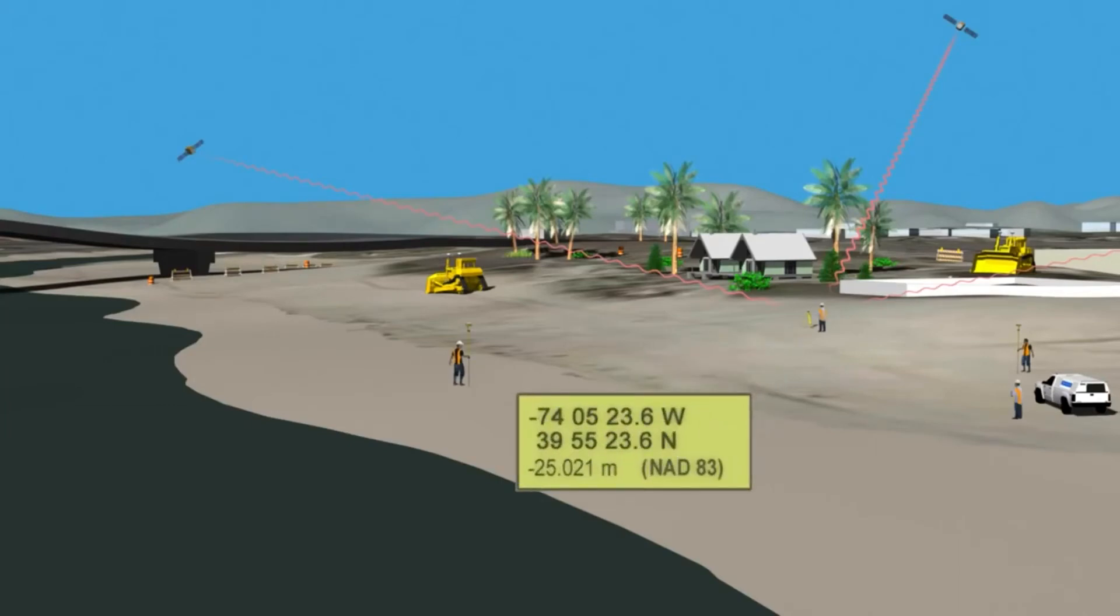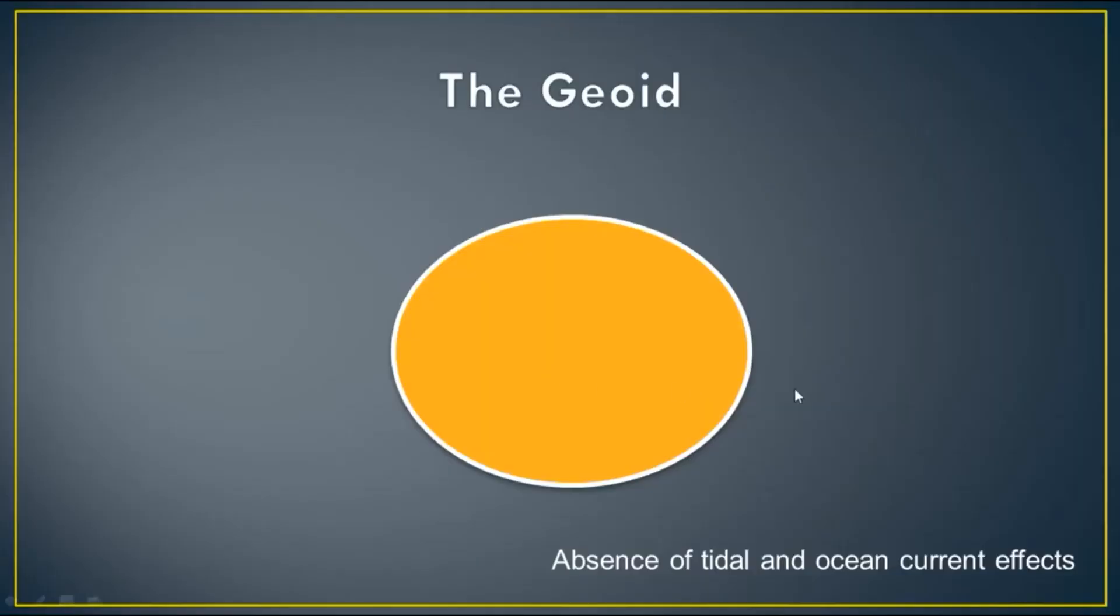During such measurement we cannot get accurate height. Sometimes we get negative height also. To get more accurate height, we should use the geoidal model that can provide the vertical datum.